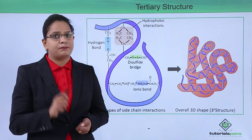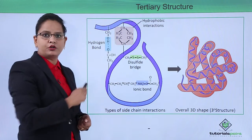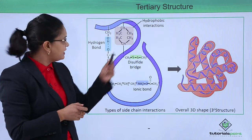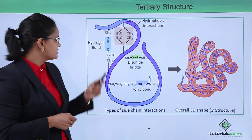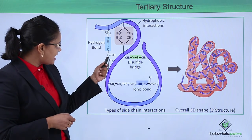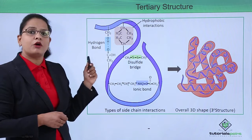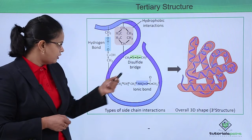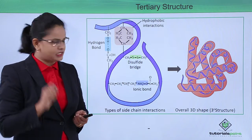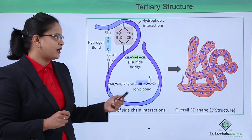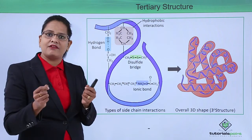Looking at the bonding: the non-polar groups interact to form hydrophobic interactions, the OH group interacts with another OH group to form a hydrogen bond, there is a disulfide linkage found between cysteine residues, and these are the ionic bonds.